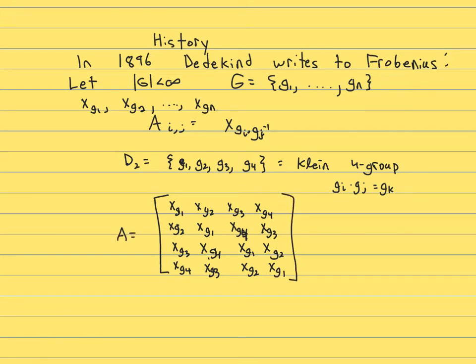And so what was Dedekind doing? He was factoring the determinant. Your entries are variables, so the determinant is going to be a polynomial. When g was abelian, this thing would factor.